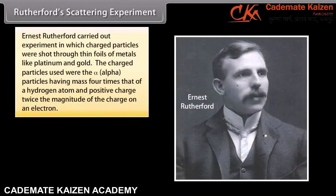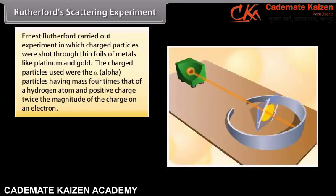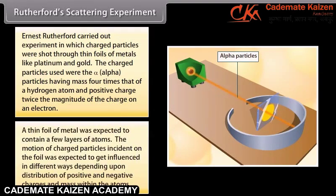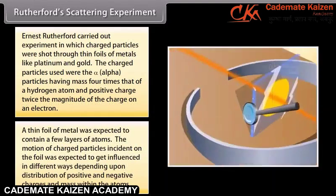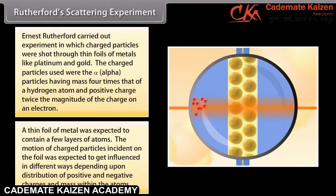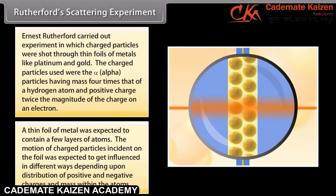Rutherford Scattering Experiment. Ernst Rutherford carried out an experiment in which charged particles were shot through thin foils of metals like platinum and gold. The charged particles used were alpha particles, having mass four times that of a hydrogen atom and positive charge twice the magnitude of the charge of an electron. A thin foil of metal was expected to contain a few layers of atoms. The motion of charged particles incident on the foil was expected to get influenced depending upon the distribution of positive and negative charges and mass within the atoms.